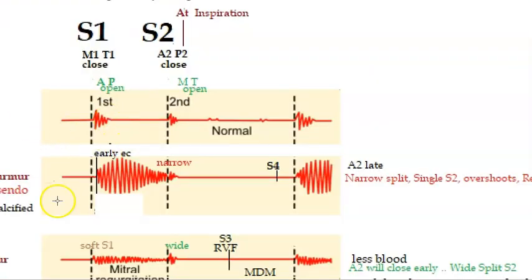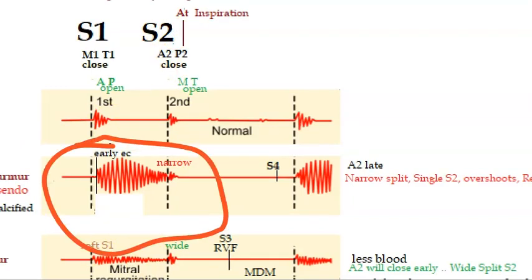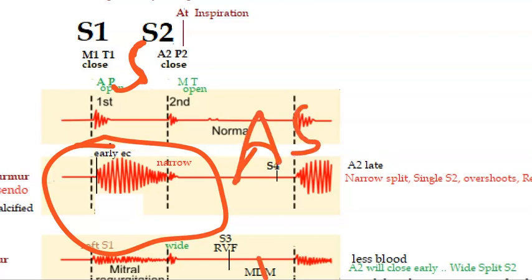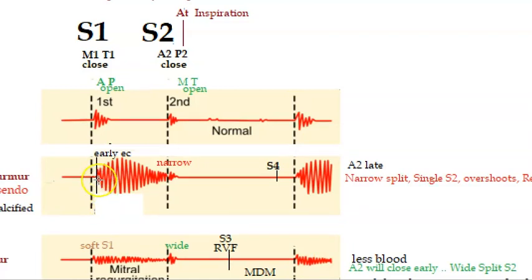Where will you see this type of murmur? This is a systolic murmur. We can see it in aortic stenosis, and also in mitral regurgitation. But in aortic stenosis, we can see an early ejection click, and this is a crescendo-decrescendo murmur. So this systolic ejection murmur is characteristic of aortic stenosis.